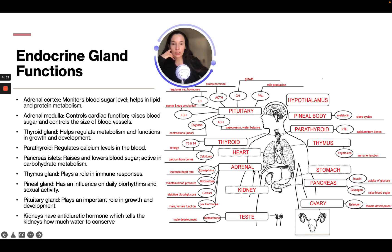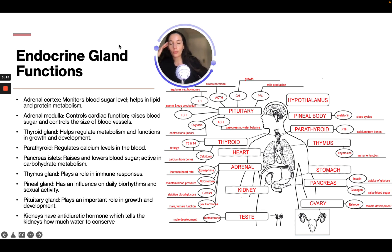The adrenals create epinephrine, aldosterone, cortisol, and sex hormones. Epinephrine is used to increase heart rate. Aldosterone maintains blood pressure. Cortisol stabilizes blood glucose. And sex hormones are related to male and female function.